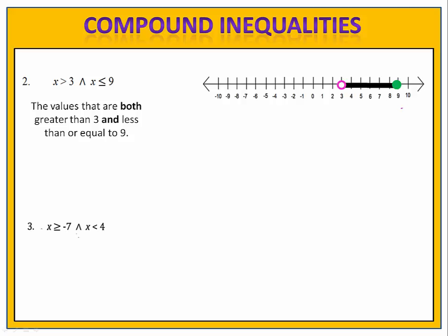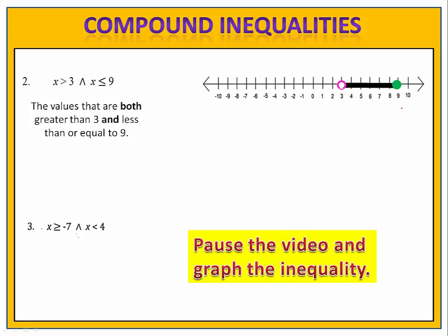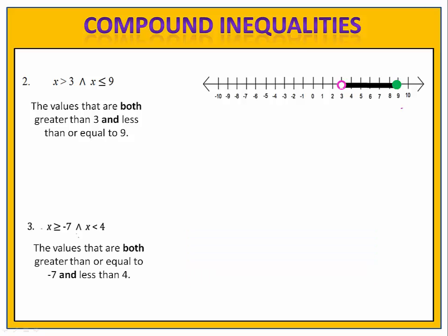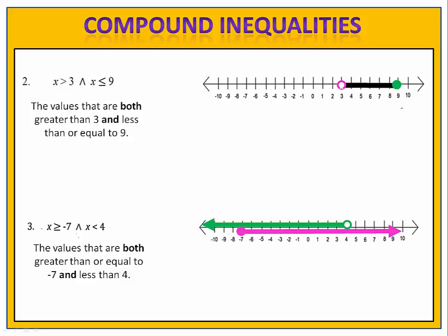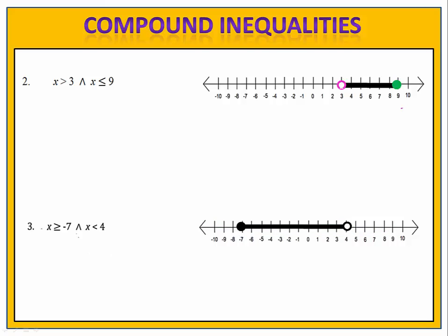Exercise three is for you to try. Please pause the video and graph this inequality. In this exercise, we have x is greater than or equal to negative seven and x is less than four. We're looking for the values that are both greater than or equal to negative seven and less than four — the intersection of those two sets. We graph each of the inequalities separately and find the part they have in common. That intersection is the inequality x is greater than or equal to negative seven and x is less than four.